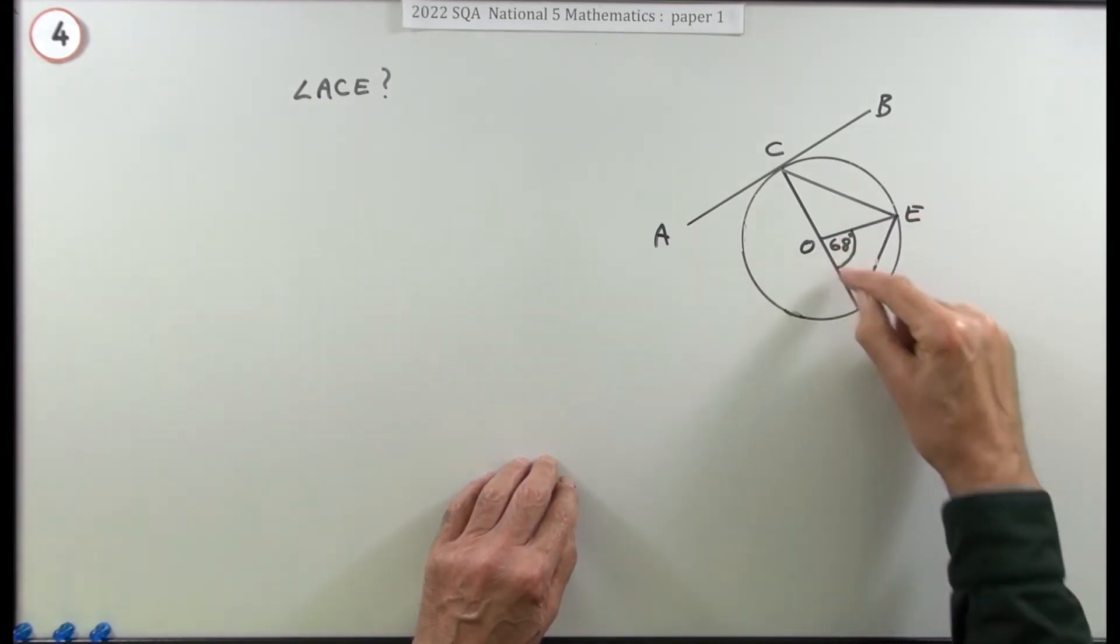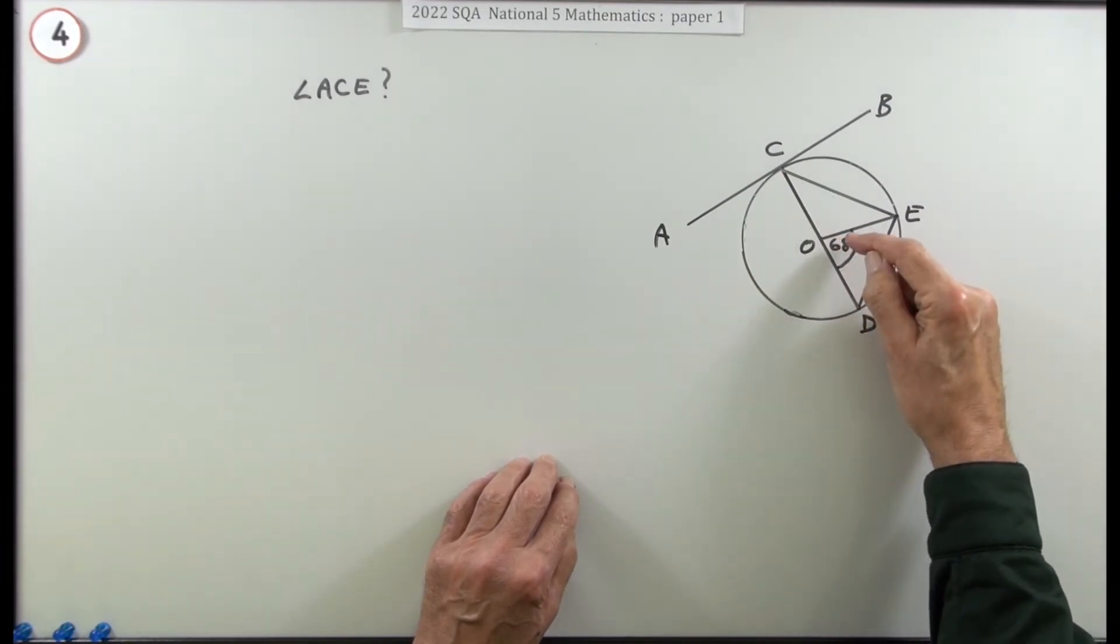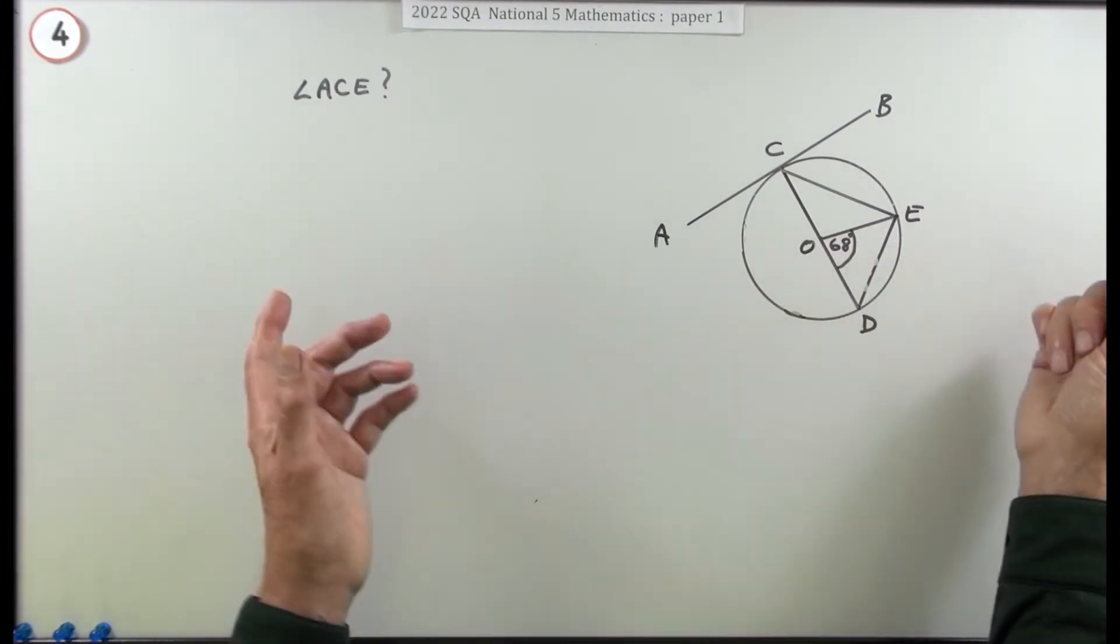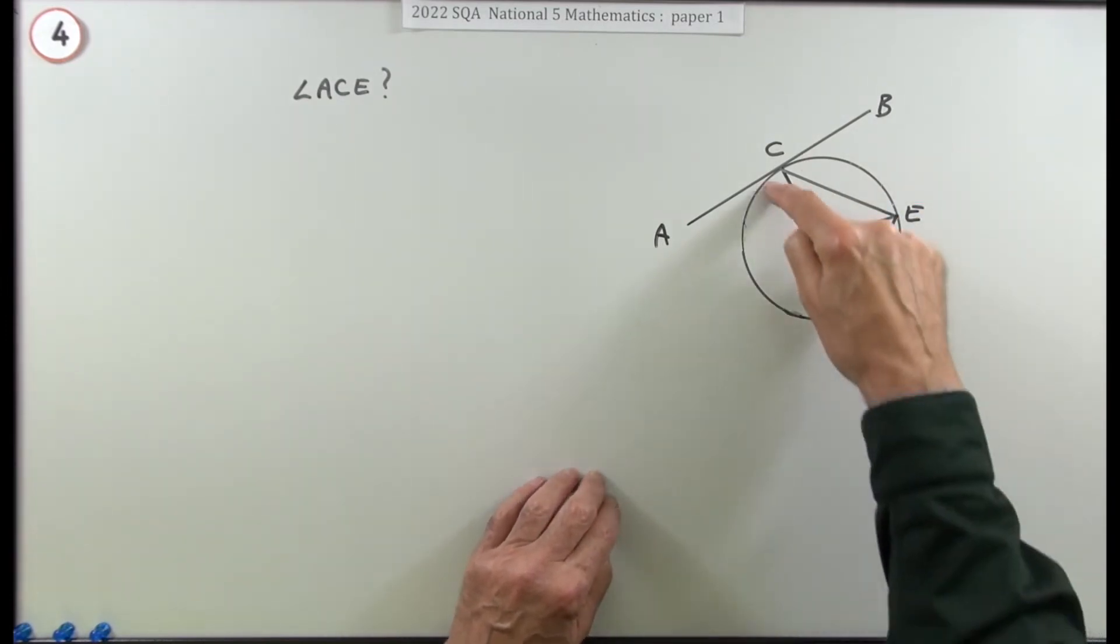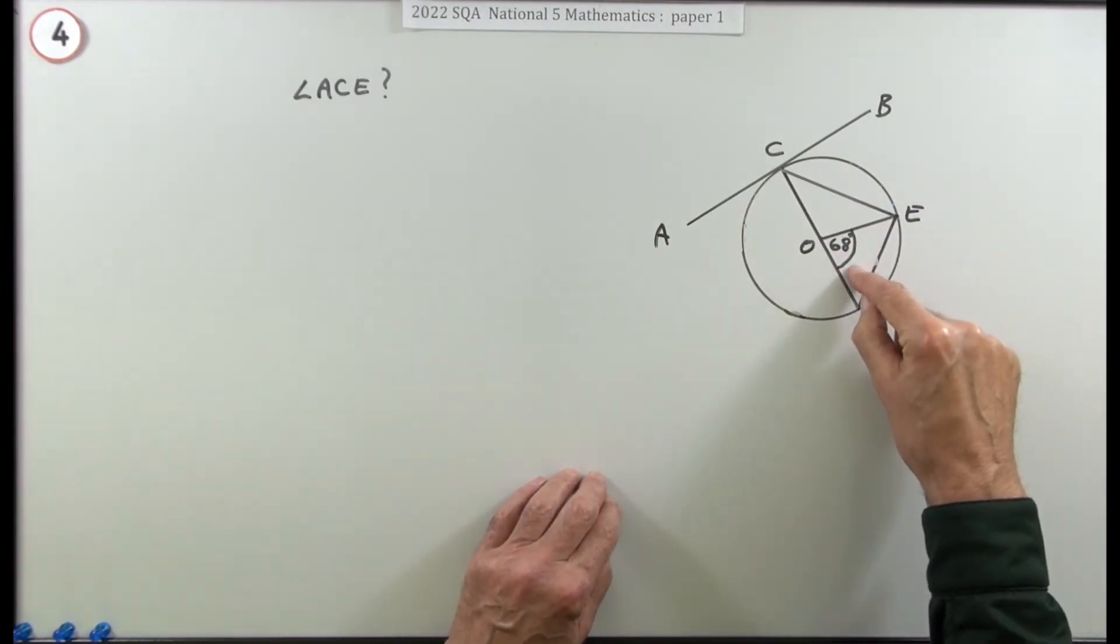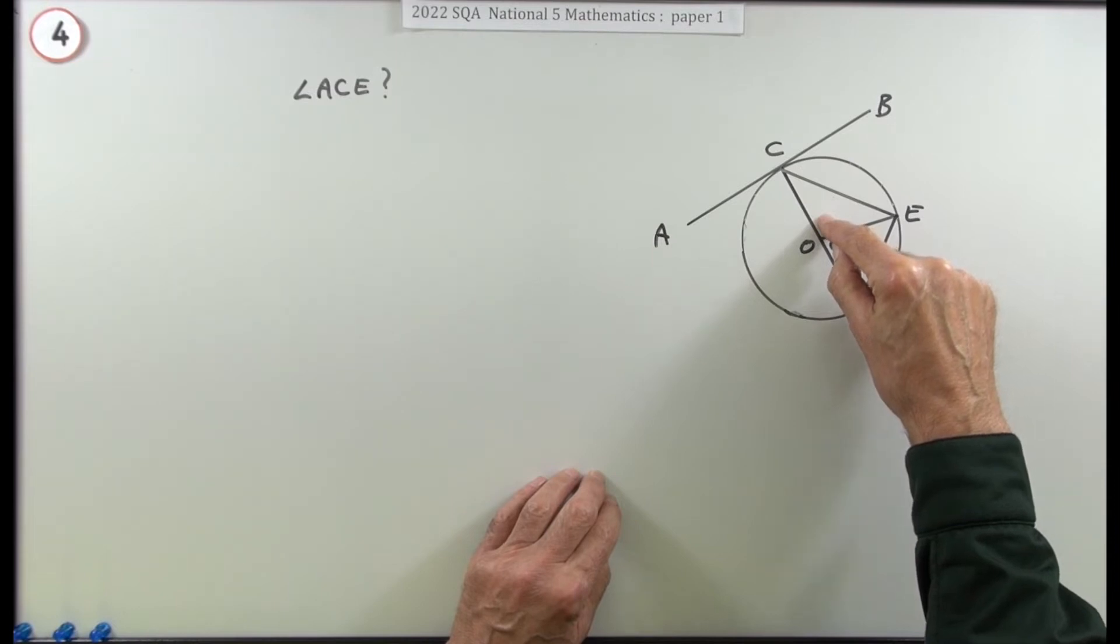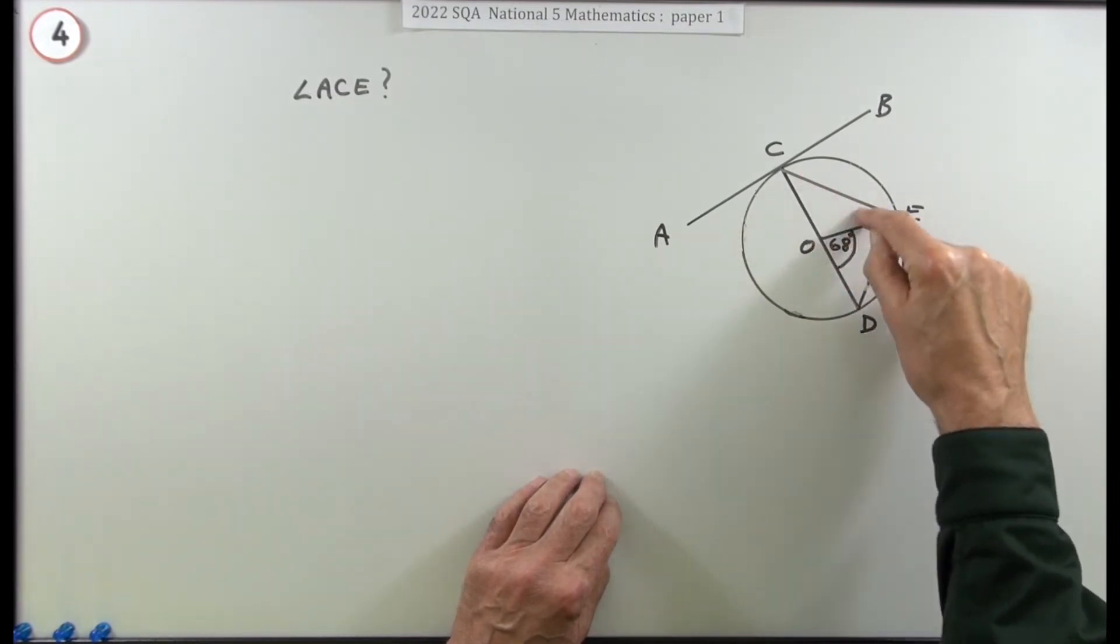There are all sorts of routes to getting to this answer. You could say, here's an isosceles triangle: if that's 68, I've still got 112, so that's 56 each. Then you could say there's a 90 degrees and carry on like that. Or you could say here's a straight line: if that's 68, then since that adds up to 180 just the same as that, well that's 112. Now I've got an isosceles triangle, I can share them out.